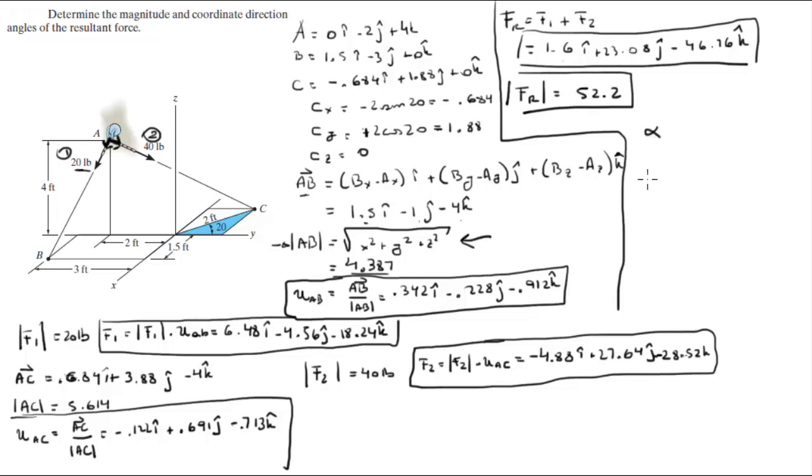And then to find the direction angles, you do the cosine inverse of the x over the magnitude, cosine inverse of the y over the magnitude, and cosine inverse of the z over the magnitude. So you divide each of these values by the magnitude and do the cosine inverse to get the angle, and you get it's 88.24 degrees, 63.76 degrees, and 153.6 degrees.